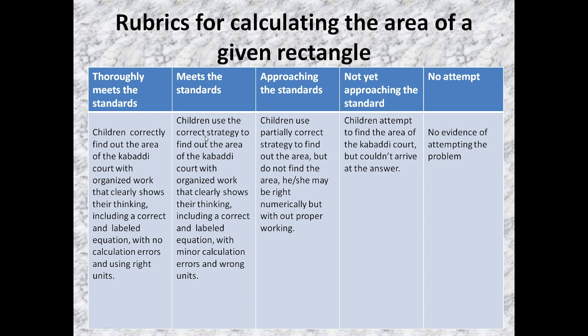And next one is, children use the correct strategy. They know how to calculate it. And they will also arrive at the answer. But they may commit minor errors in calculation part, or in writing units.